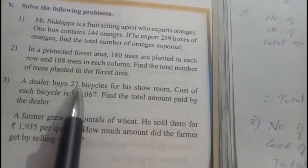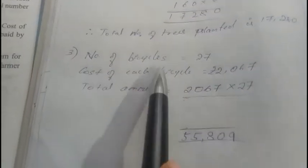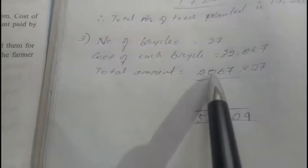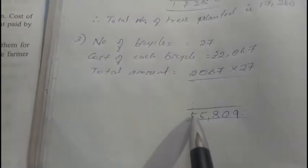So for 27 bicycles, how much? I have written the statement. You need to calculate and write it down. I already wrote the answer. You need to multiply and check whether this is correct or wrong.